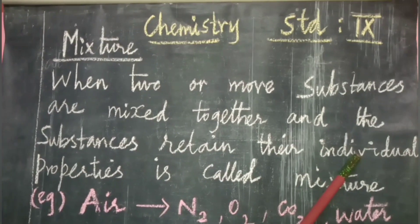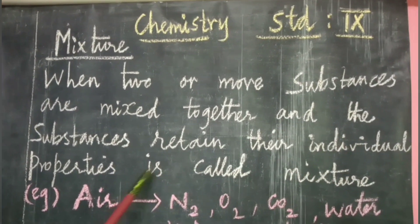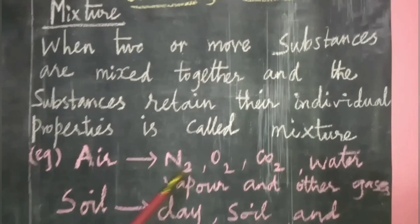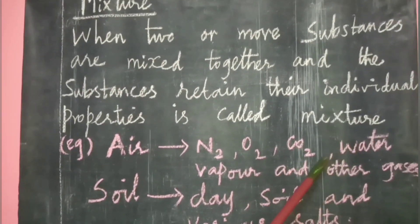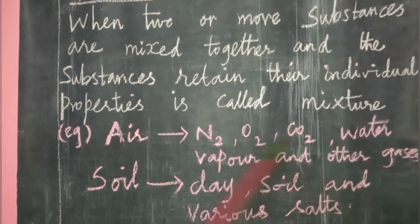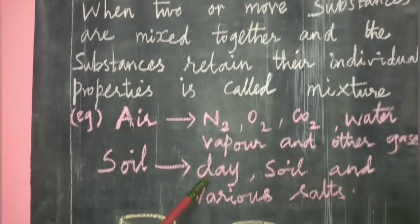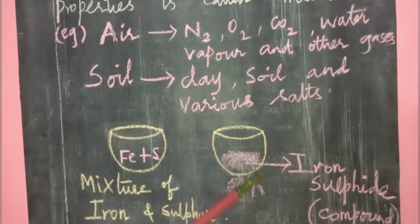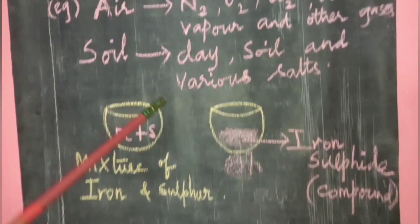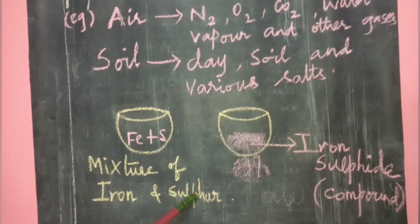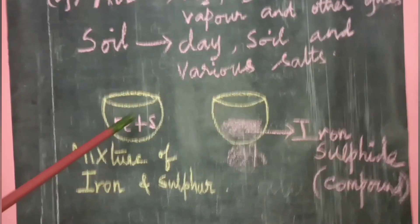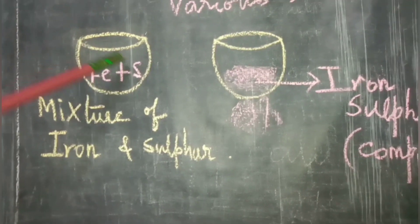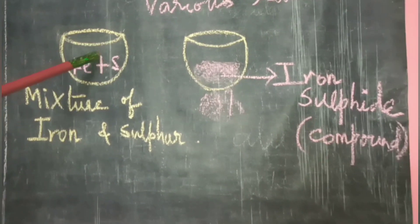The third topic is mixture. A mixture is formed when two or more substances are mixed together and the substances retain their original individual properties. For example, air is a mixture of nitrogen, oxygen, carbon dioxide, water vapor, and other gases. Soil is a mixture of clay and various salts. Another example: take a china dish containing a mixture of iron and sulfur. Iron is gray in color and sulfur is yellow in color.